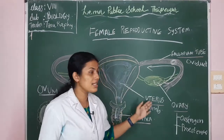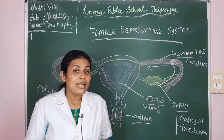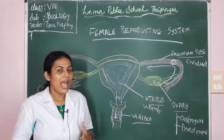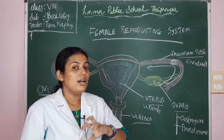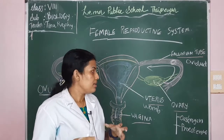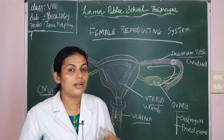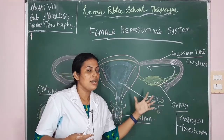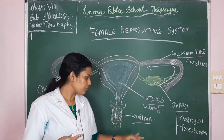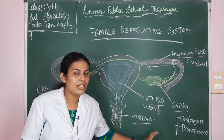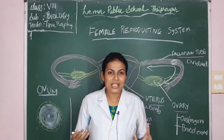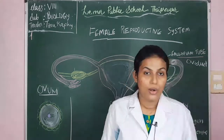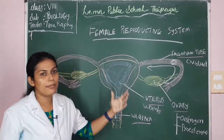Third — the uterus, also called the womb, where the zygote develops into a new baby. It is a sac-like region where the zygote undergoes rapid cell division to form a baby. Fourth — the vagina, the external opening of the female reproductive system. The female reproductive system also has accessory glands like mammary glands for the nourishment of infants.